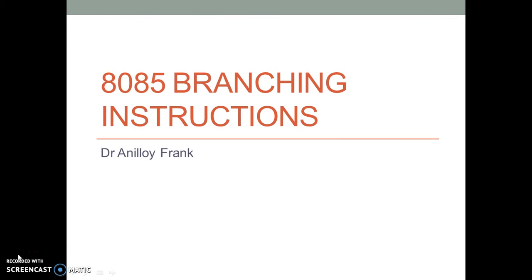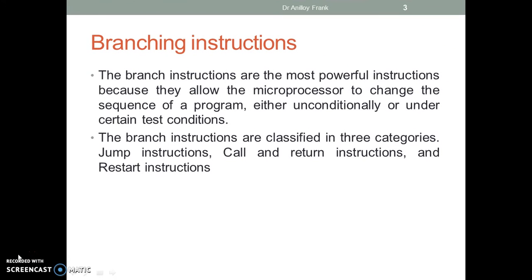Hello, welcome to this video on 8085 branching instructions. The branch instructions allow the microprocessor to change the sequence of a program unconditionally or under certain test conditions. The branch instructions are classified in three categories: jump instructions, call and return instructions, and restart instructions.